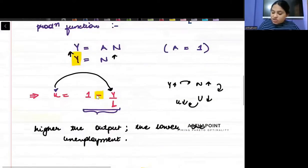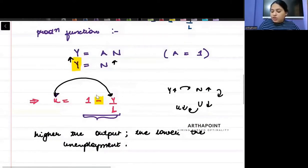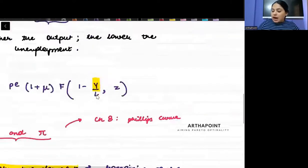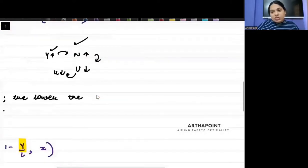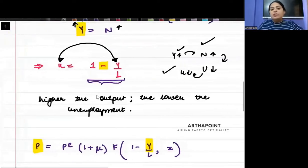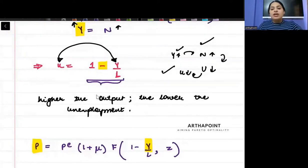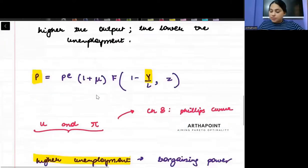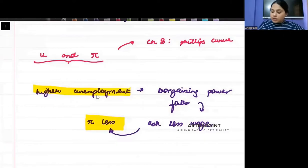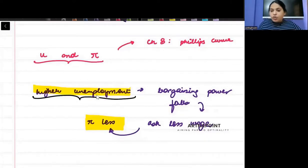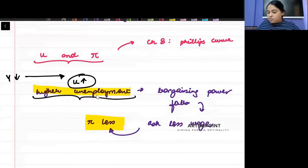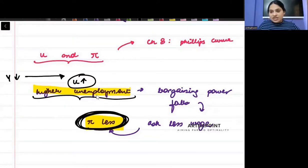But I have just now proved to you that unemployment and output are negatively related. So unemployment and output, they are negatively related to each other. So we have proved that if there is higher unemployment, there will be lower output. So Y will be less. Less Y means higher unemployment and higher unemployment means less price level, less inflation.